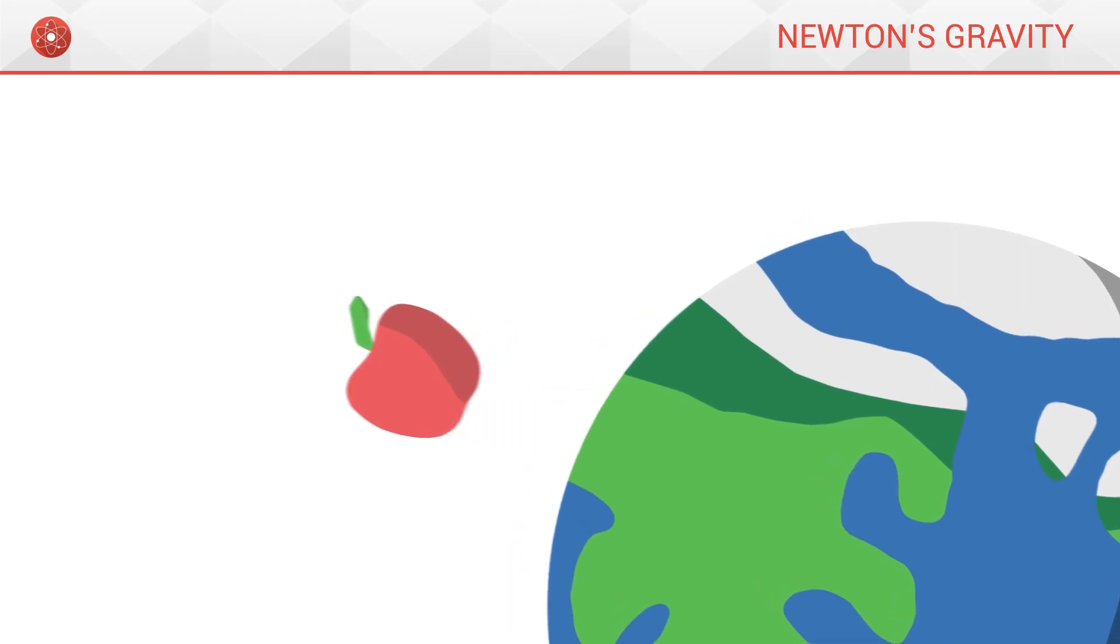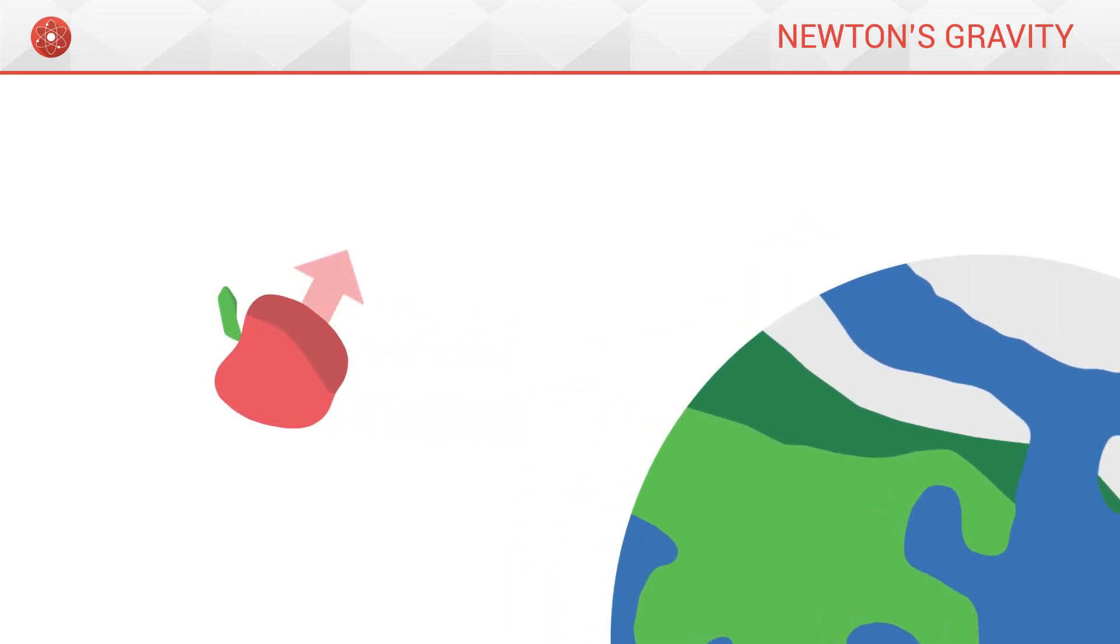Now, let's imagine that we throw the apple in a direction with a certain speed. Like before, the apple will be attracted to the Earth, but it will also move in the direction in which it was thrown, depending on its speed.